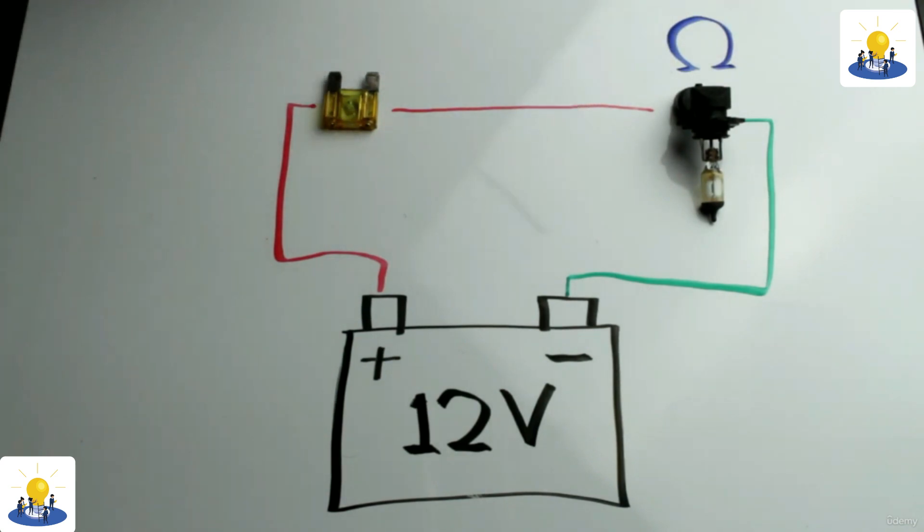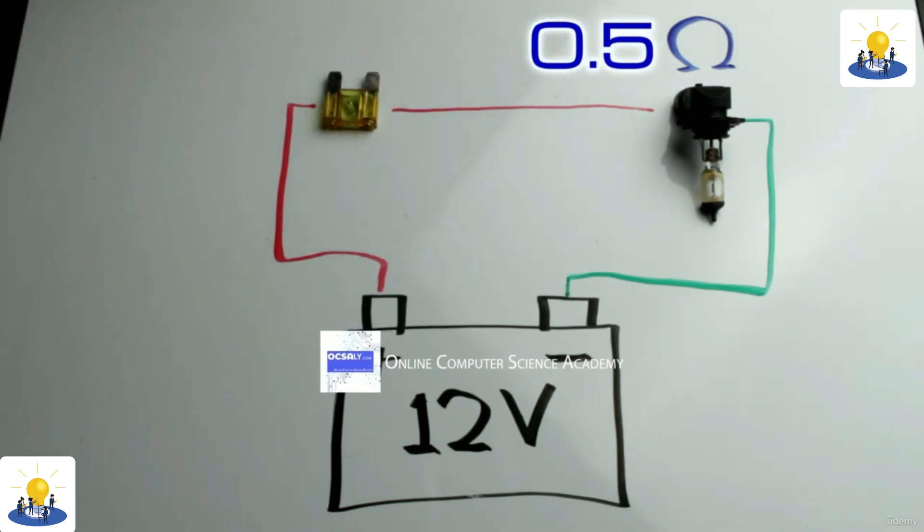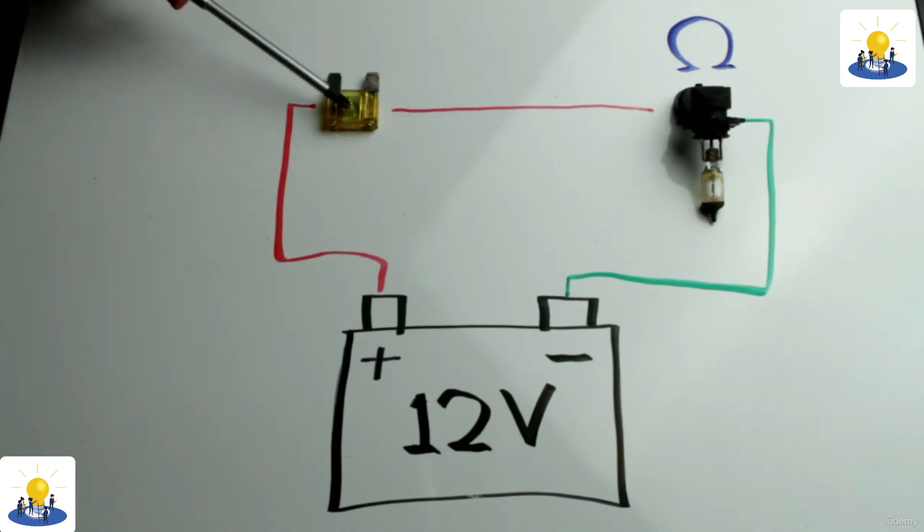A good example of this is a fuse in a wiper motor circuit. If a value were used that was much too high, then it would still protect against a severe short circuit. However, if the wiper blade froze to the screen, a large value fuse might not protect the motor from overheating.